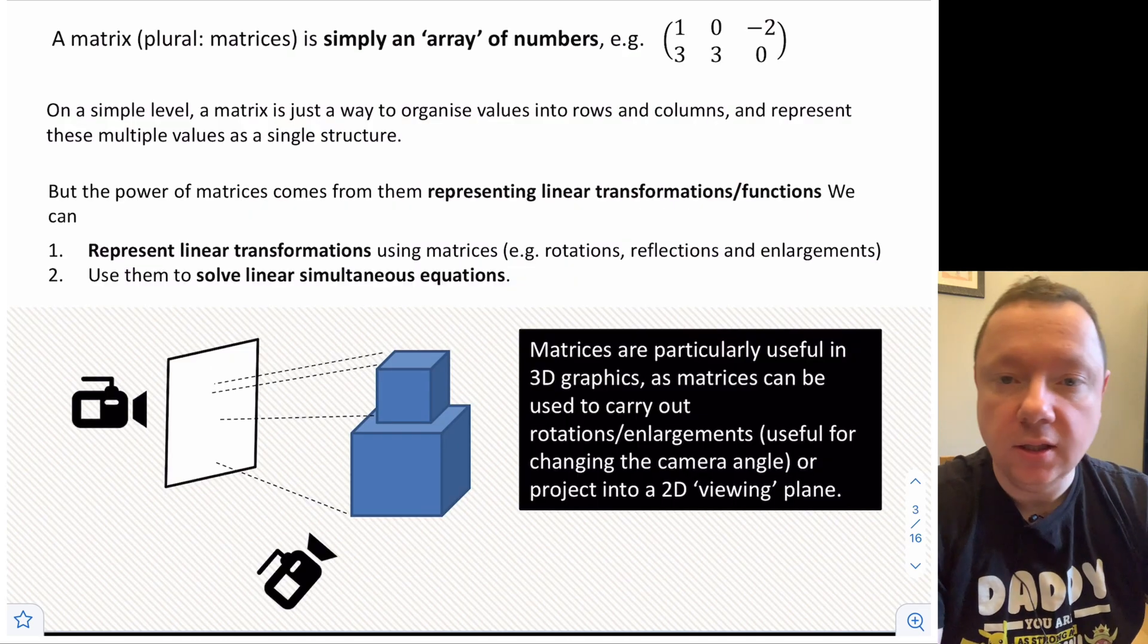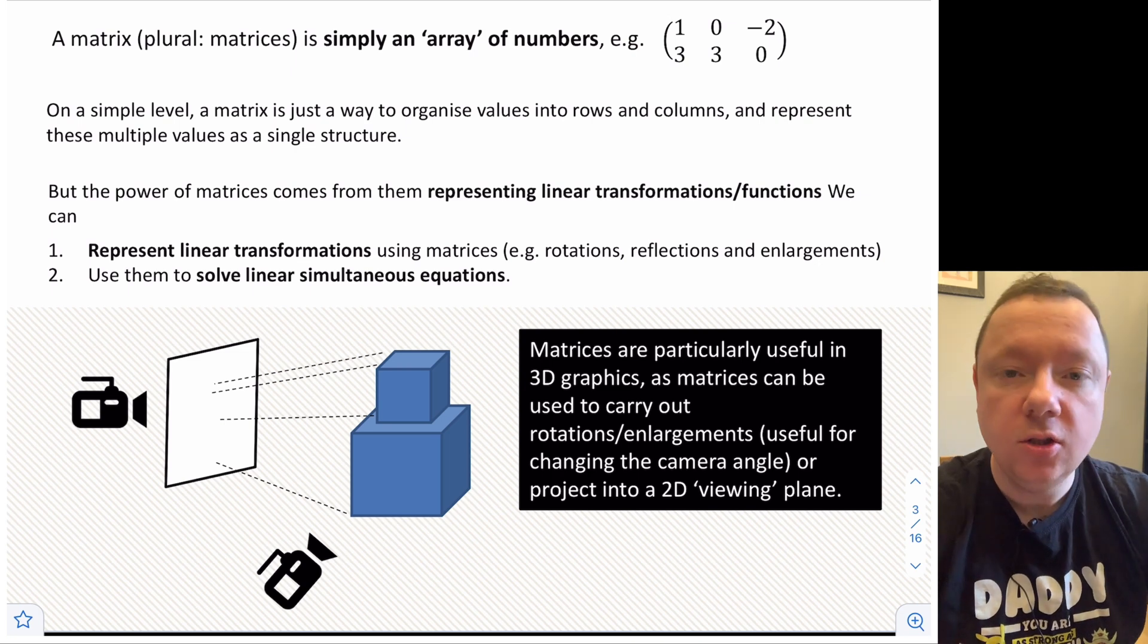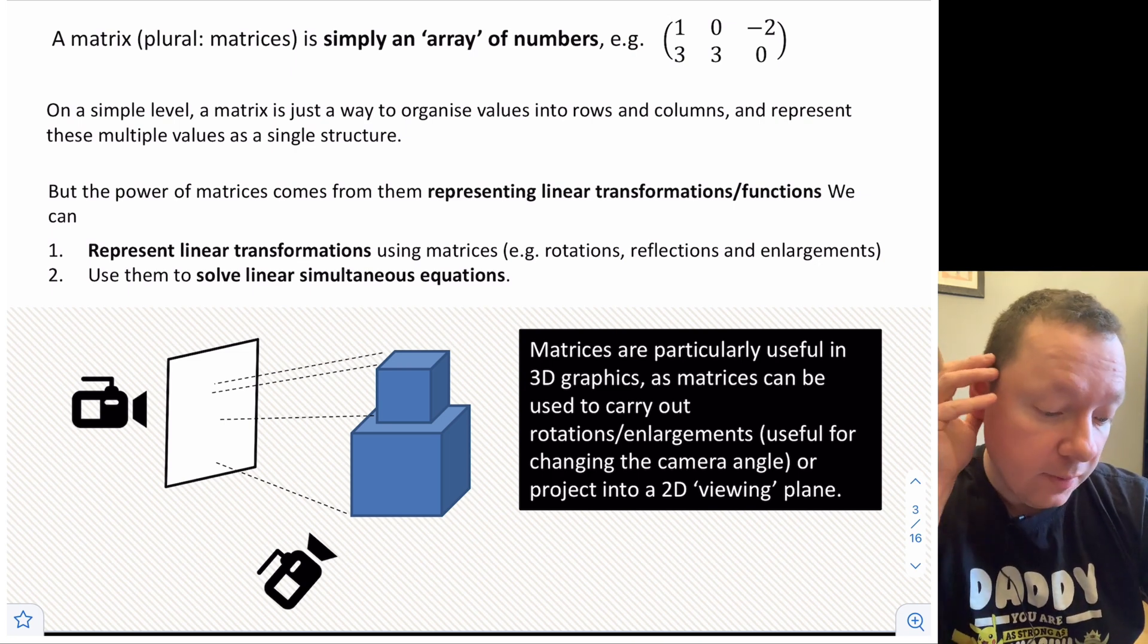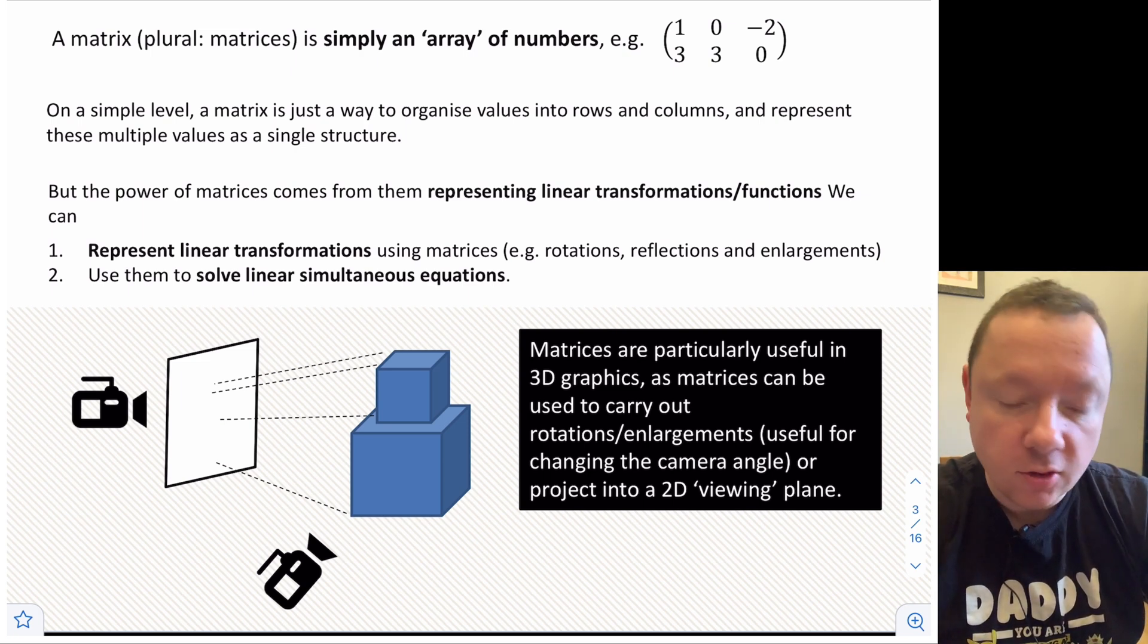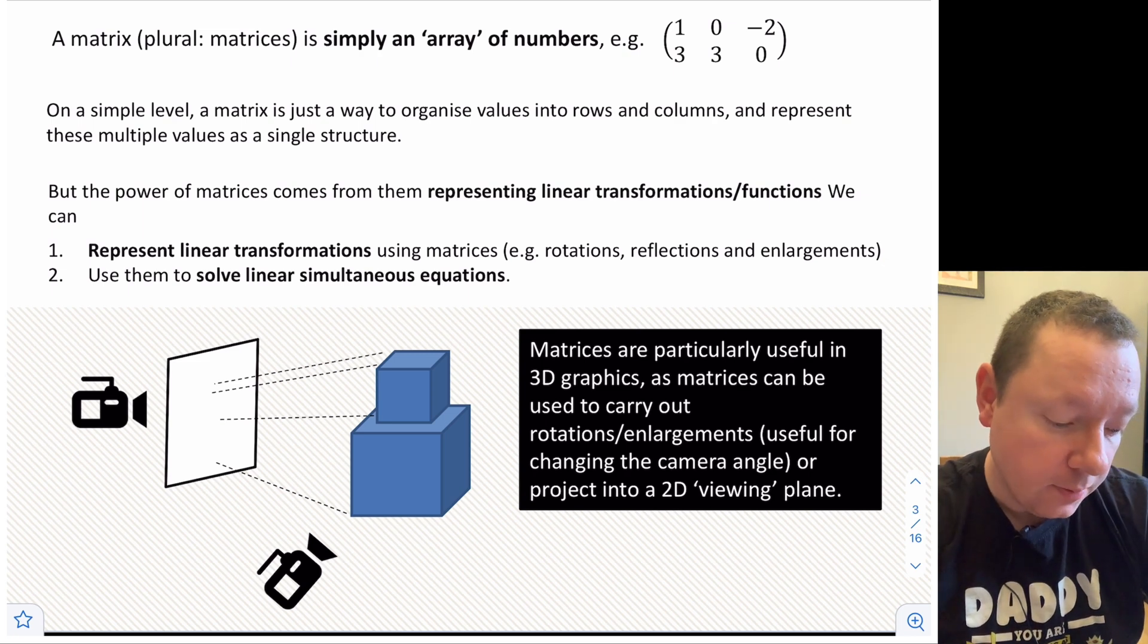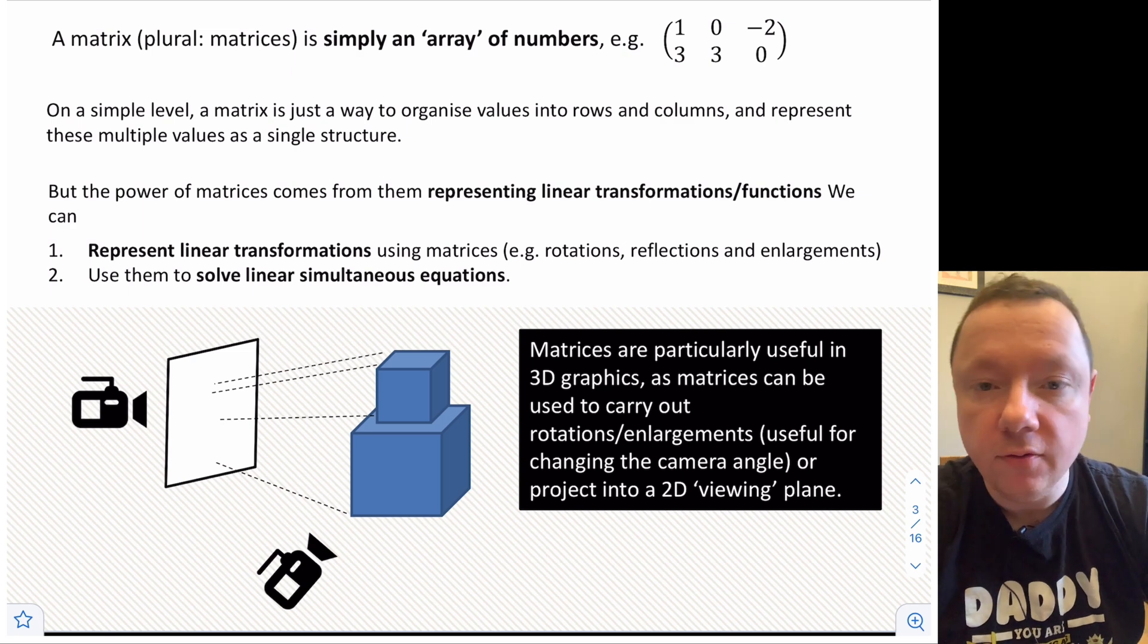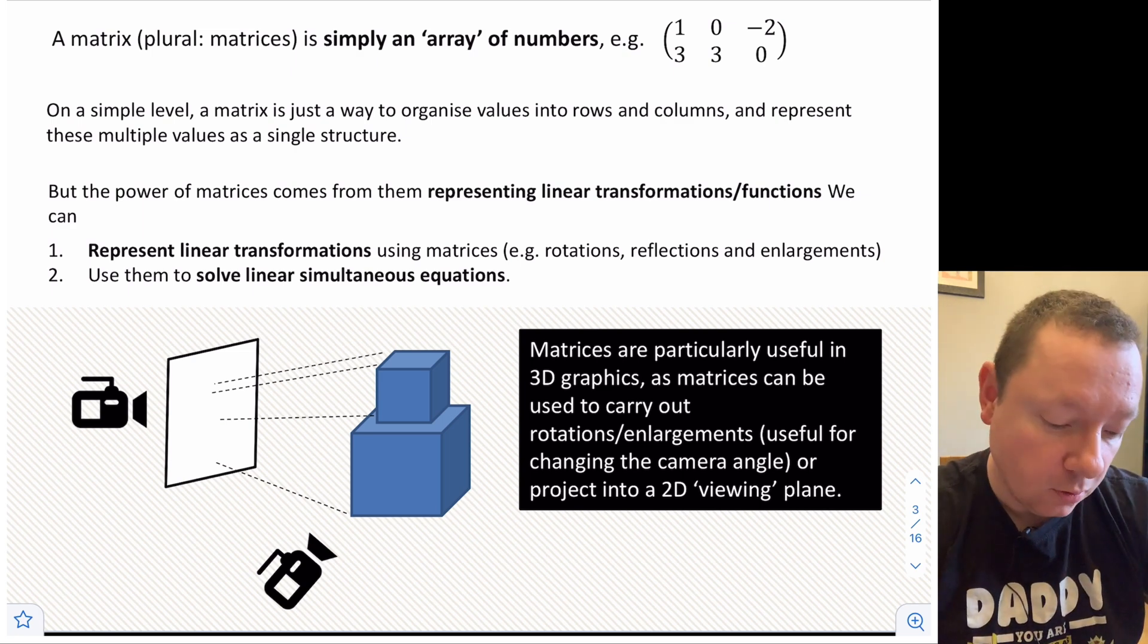A matrix in its basic form is just an array of numbers. In a simple way, it's just a way to organize numbers or values into rows and columns. The power of matrices comes from being able to represent linear transformations using matrices, so things like rotations, reflections, enlargements, and we can also use them to solve simultaneous equations.